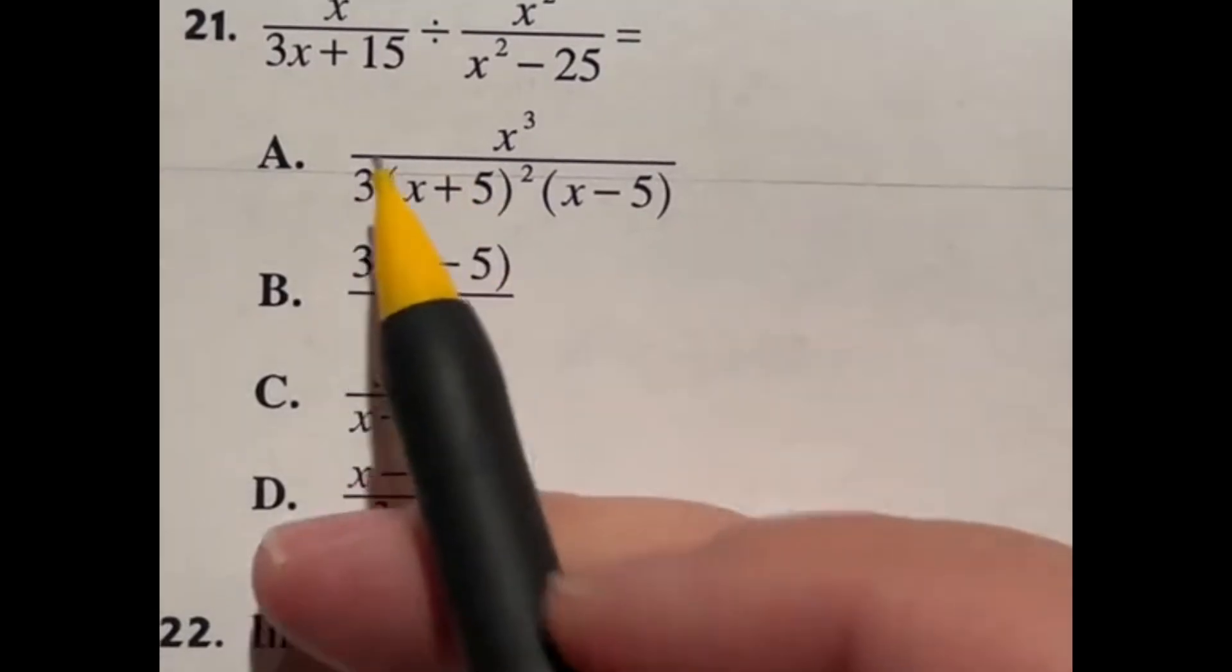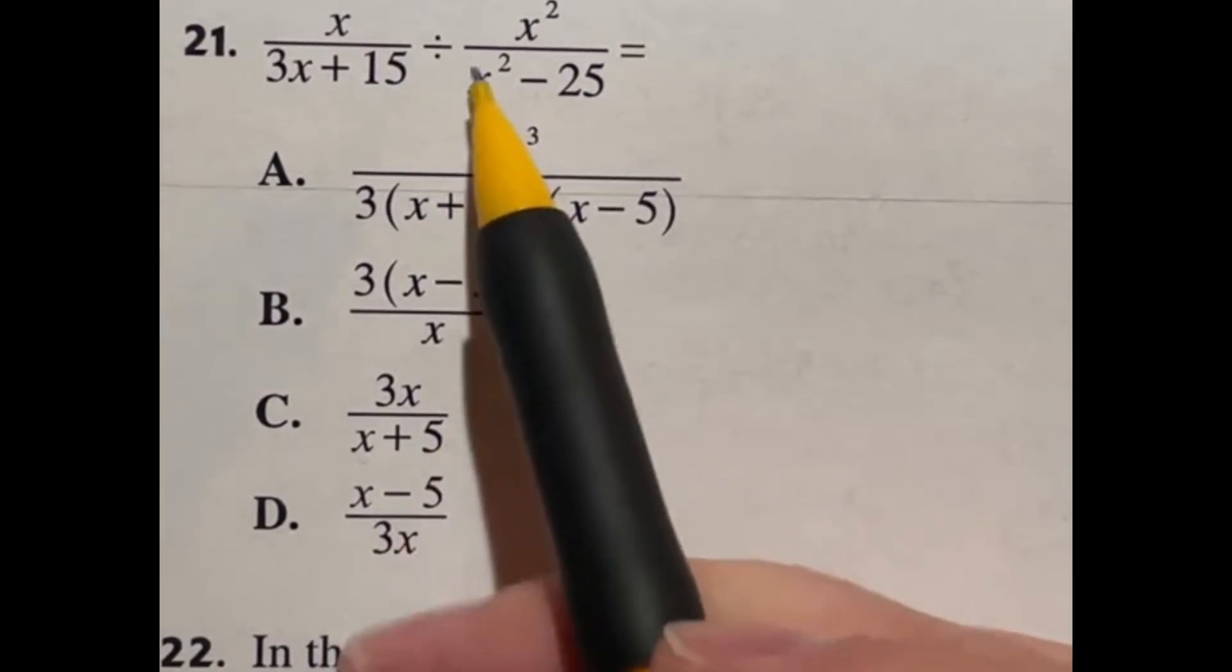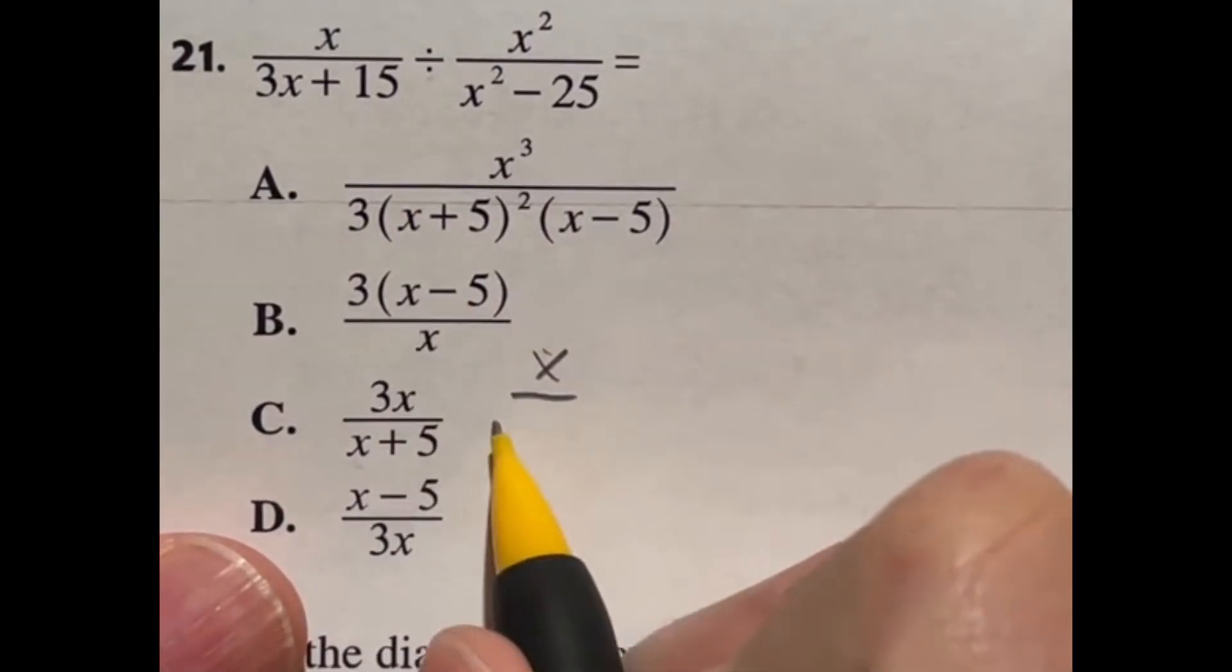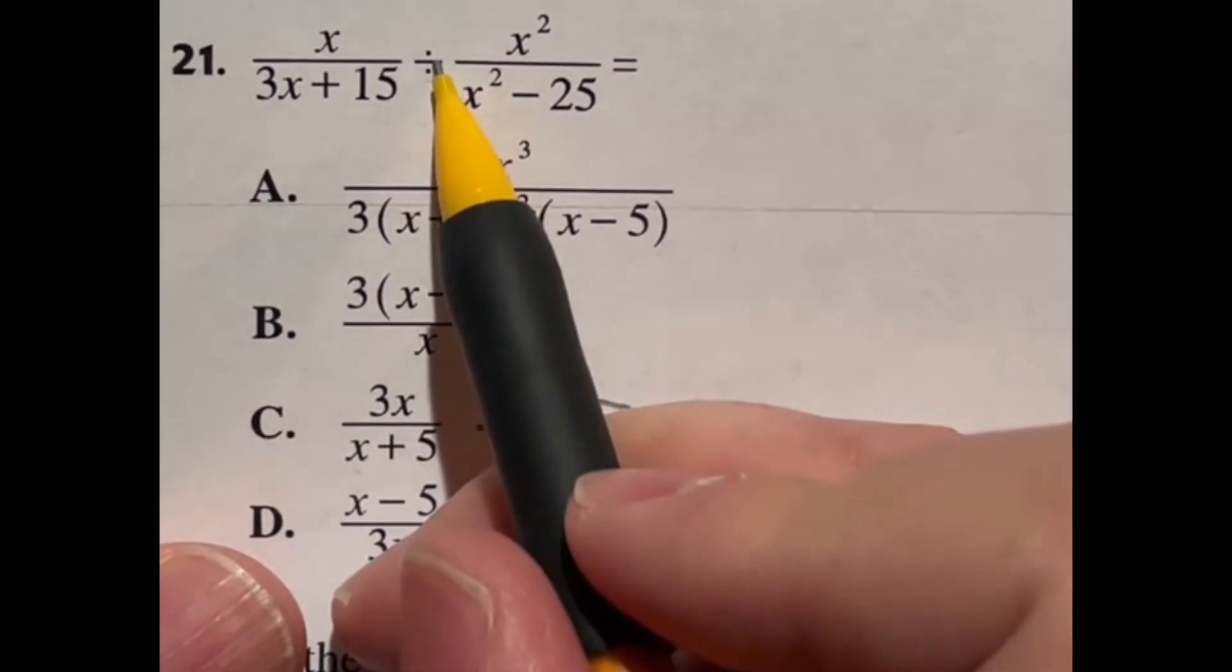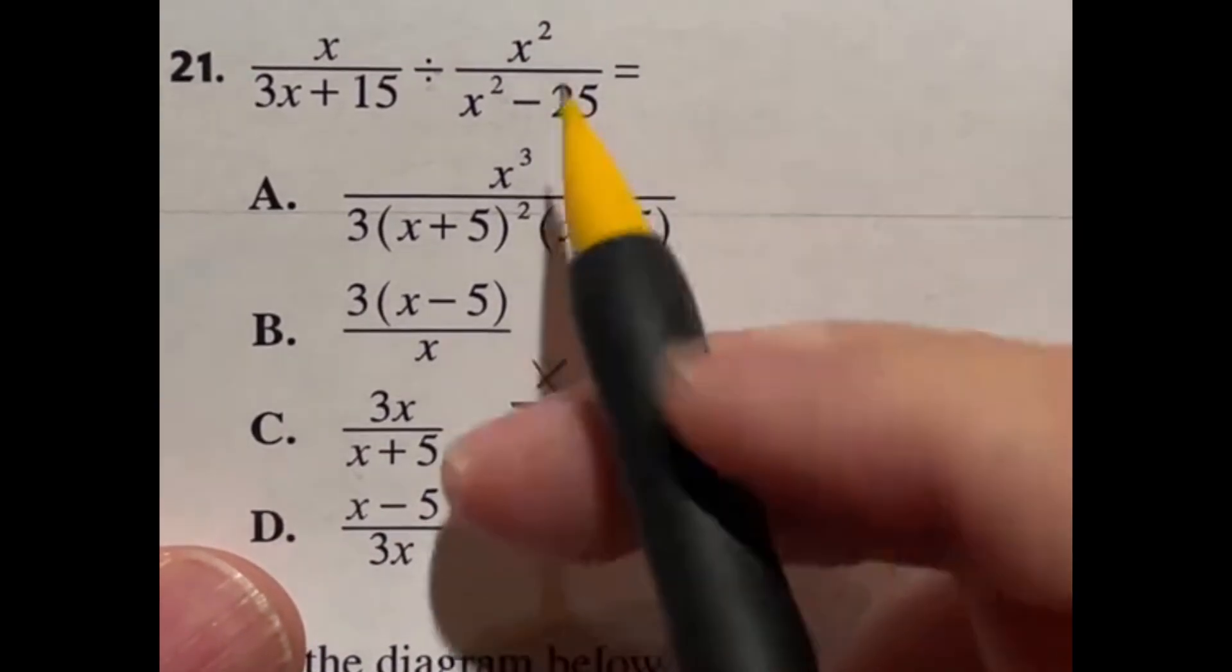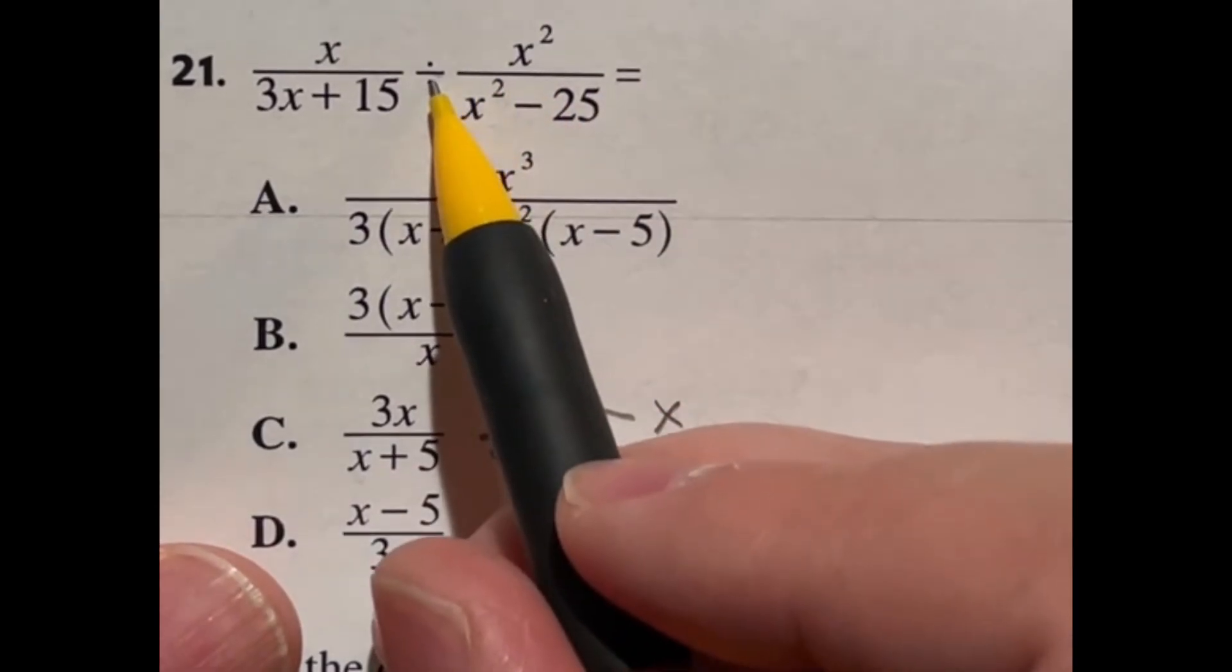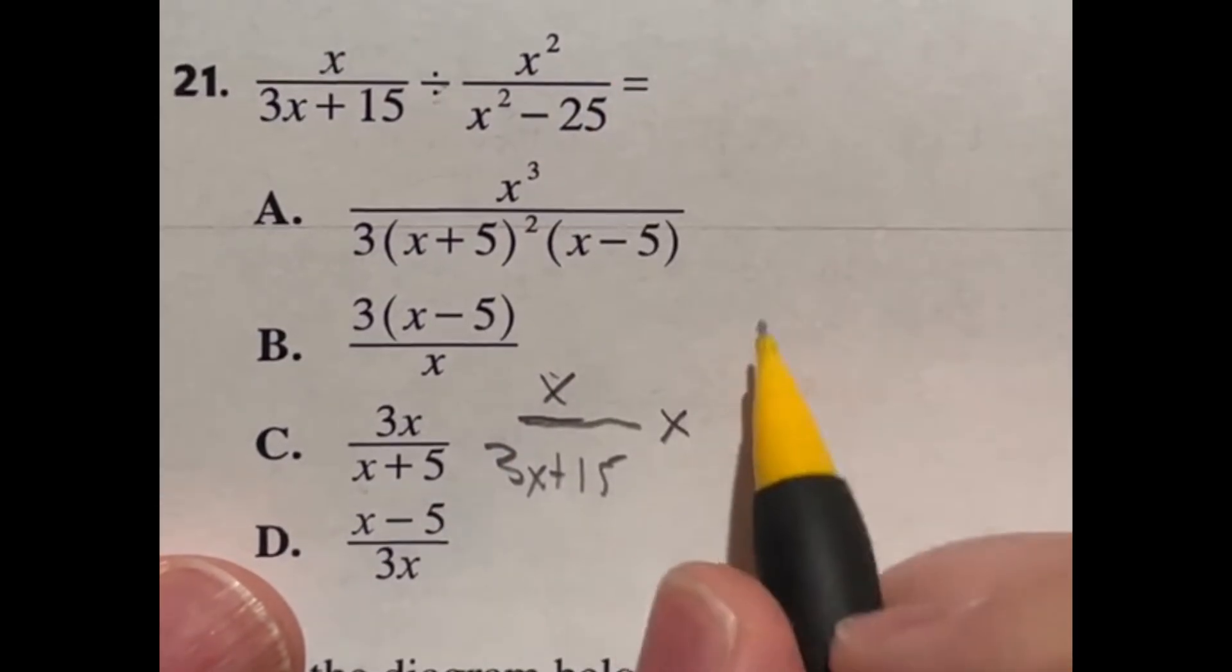So number 21 is all about manipulating this equation to simplify it down into these terms. First and foremost, if you didn't know, when you divide by a fraction, it's actually the same thing as multiplying that fraction. So I'm going to rewrite this first one: x over 3x plus 15. But when you're switching this division to multiplying, which we need to do so that we can kind of get things to work out here, you can actually just flip this guy upside down and it turns this into multiplication. This is not just algebra. This is any time whenever you're dividing by a fraction, flip it upside down and it just becomes multiplication.